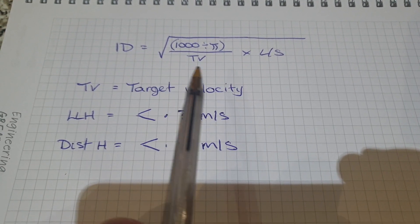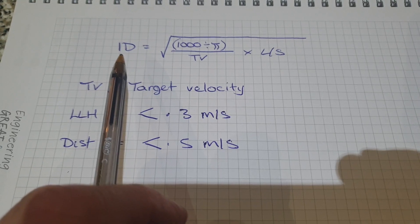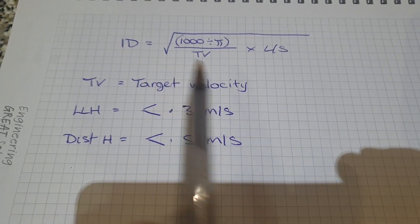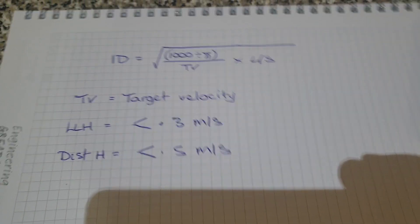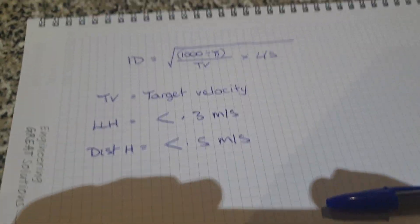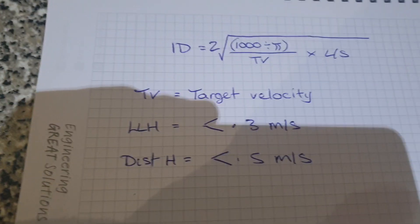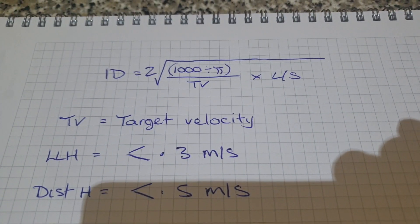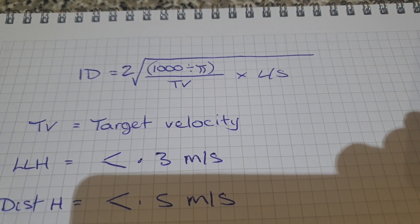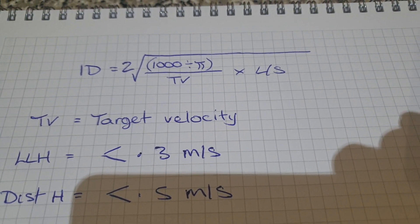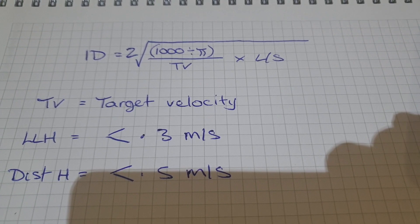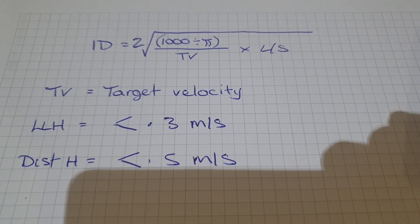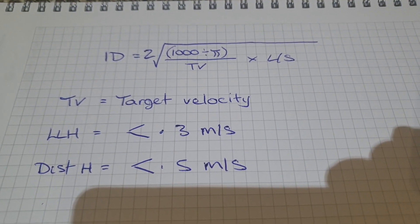But anyway, this formula is quite simple. So the internal diameter of your pipe that you need is equal to 2 times the square root of 1000 divided by pi divided by the target velocity multiplied by your liters per second that you've got from your mass flow rate calculation.